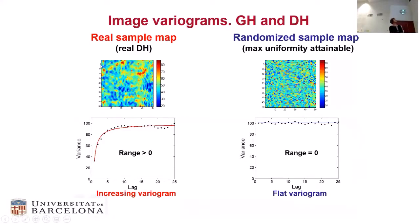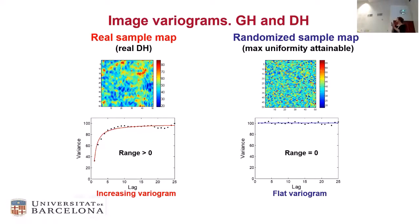For the cafe map versus the randomized map — same concentrations — the cafe map variogram reflects the presence of agglomerations. When all pixels are distributed randomly, it doesn't matter whether you compare pixels that are very close together or very far away, because they are equally similar — there is no correlation, no agglomeration. This is the kind of variogram you have in a situation of ideal mixing, so it serves as a good reference to know how far you are from a perfectly uniform distribution.